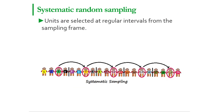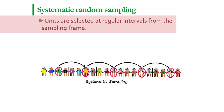In systematic random sampling, units are selected at regular intervals from the sampling frame. For example, if we want to select 1% of the total population, we first draw a random number between 1 and 100. If that number is 47, then we select animal number 47, then animal number 147, 247, and so on, ending with 1% of the population.